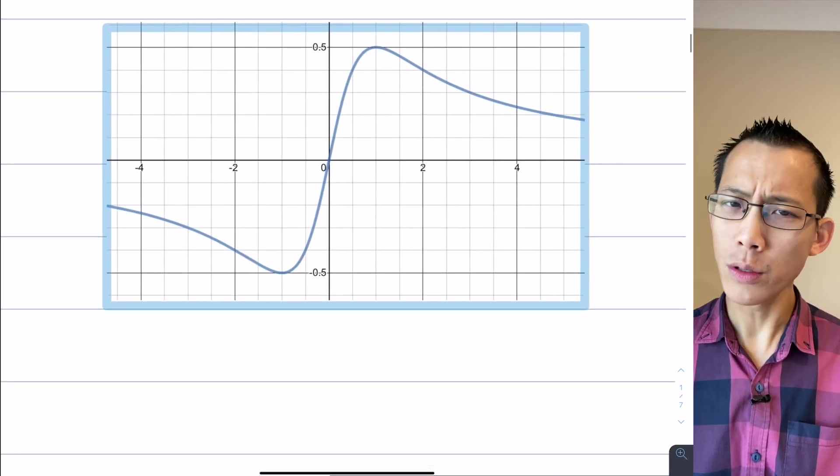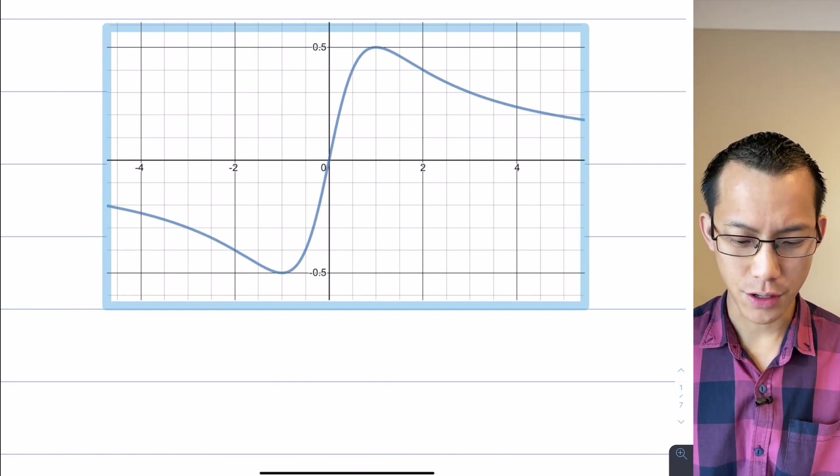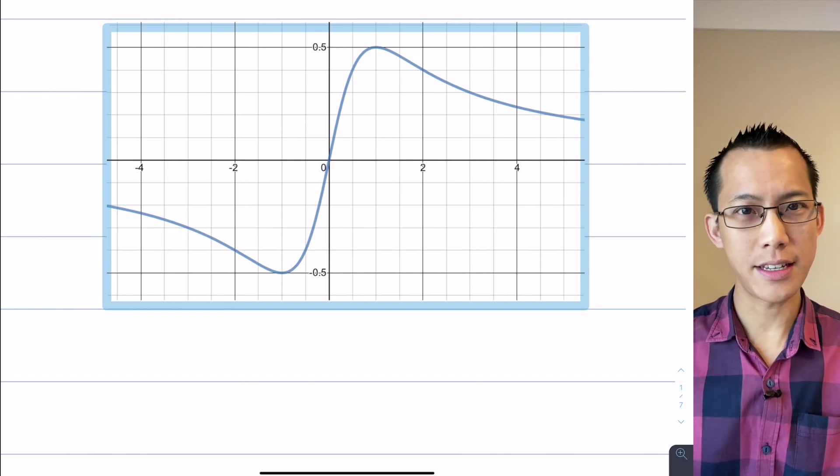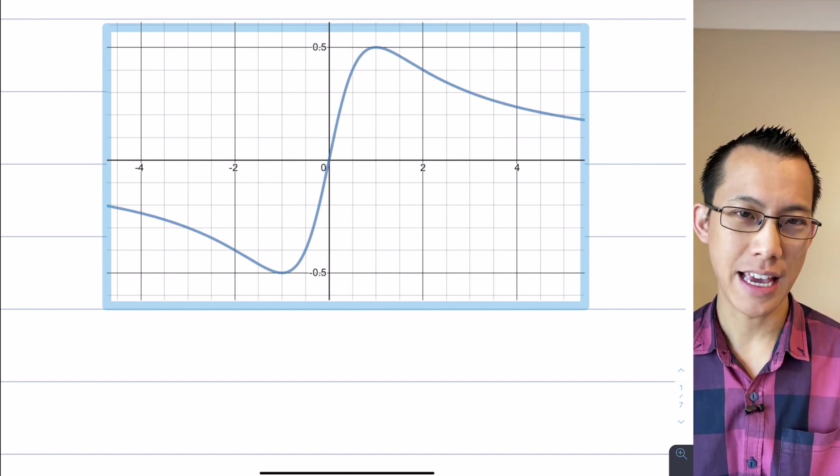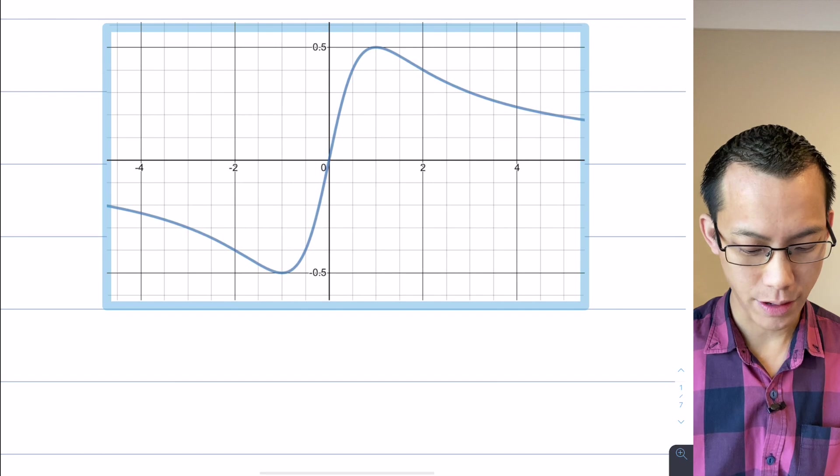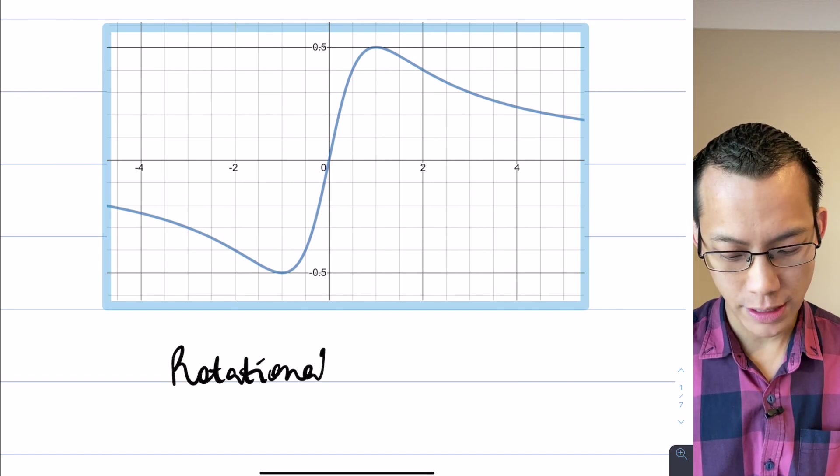This guy over here is also symmetrical but in a different way. It's not reflectional symmetry this time. This kind of shape needs to be spun around. If you rotate it, you would have the same kind of shape. So we don't call this reflectional symmetry, we call this rotational symmetry.